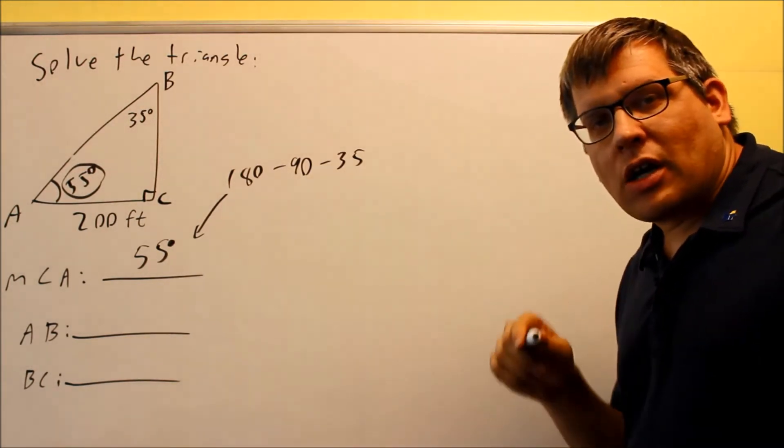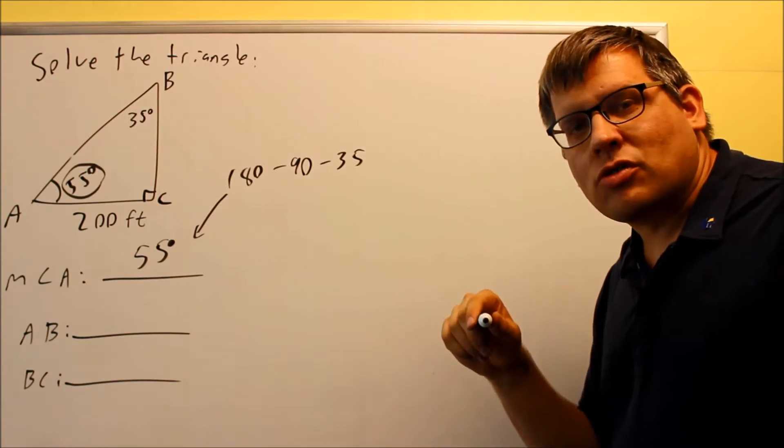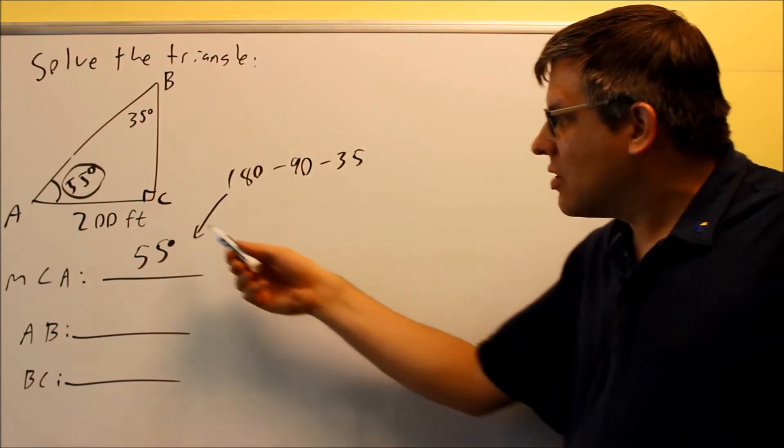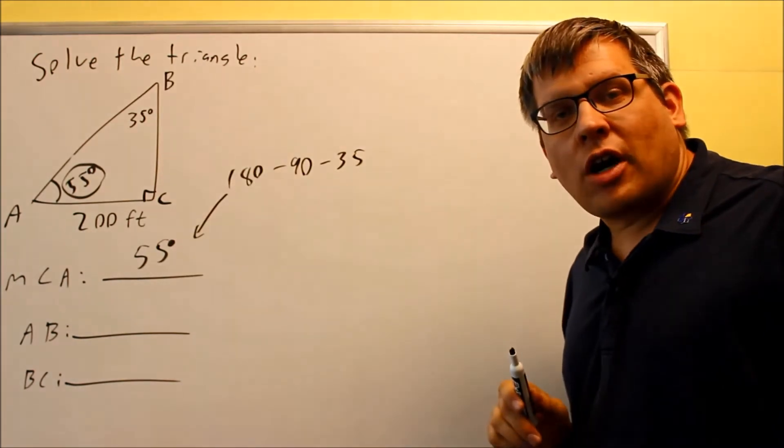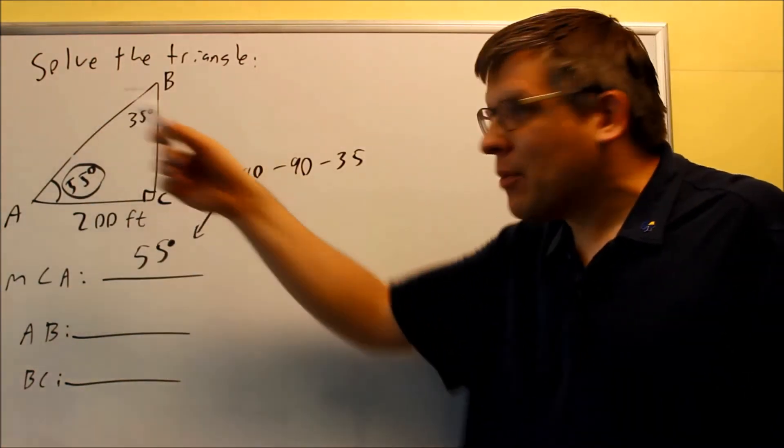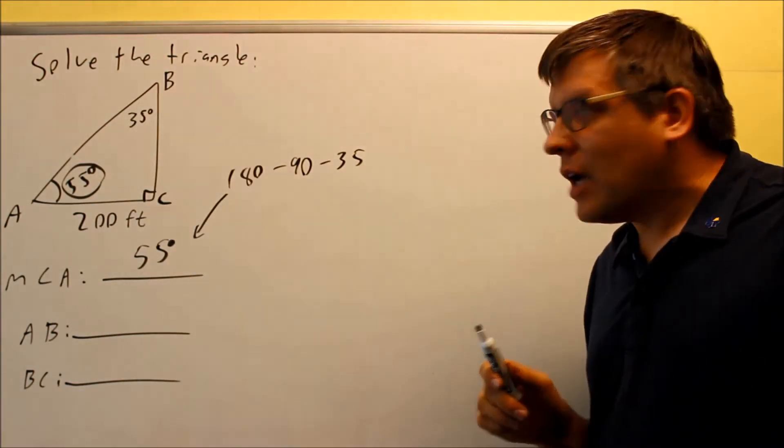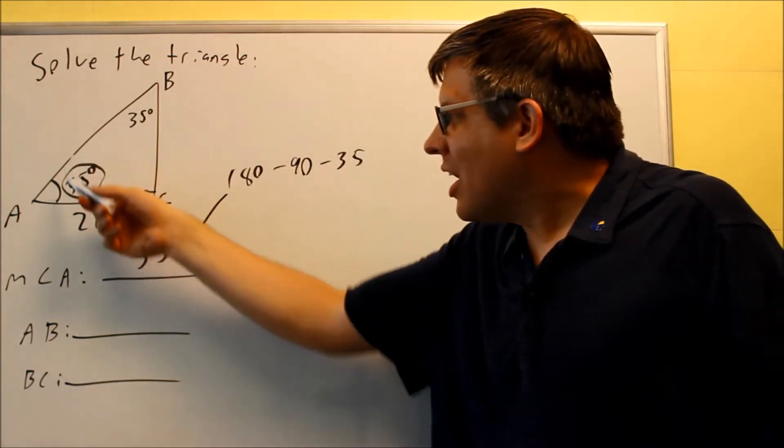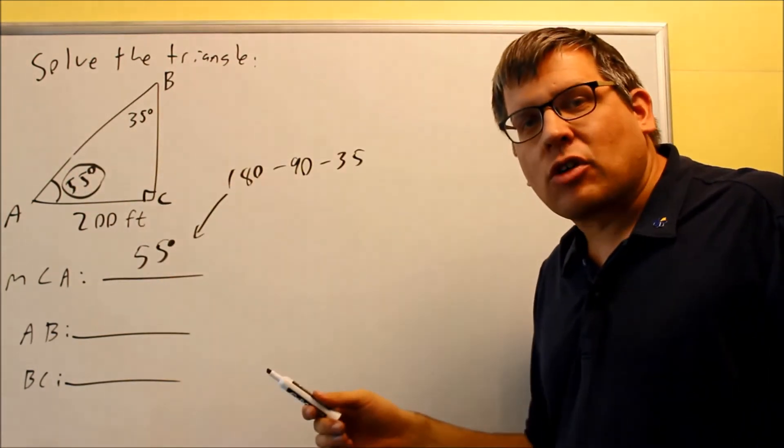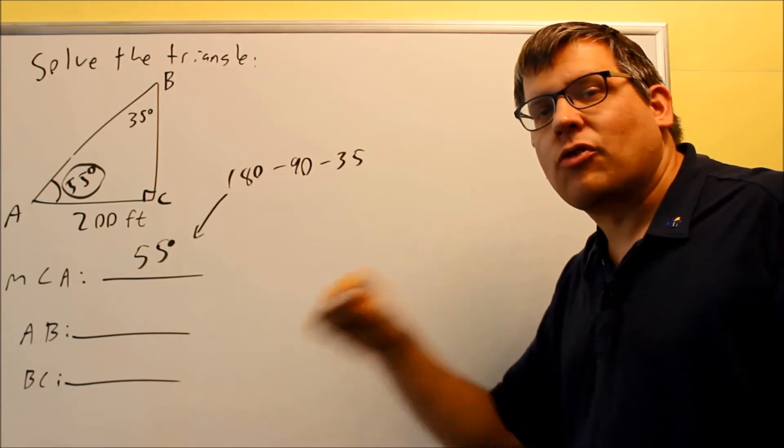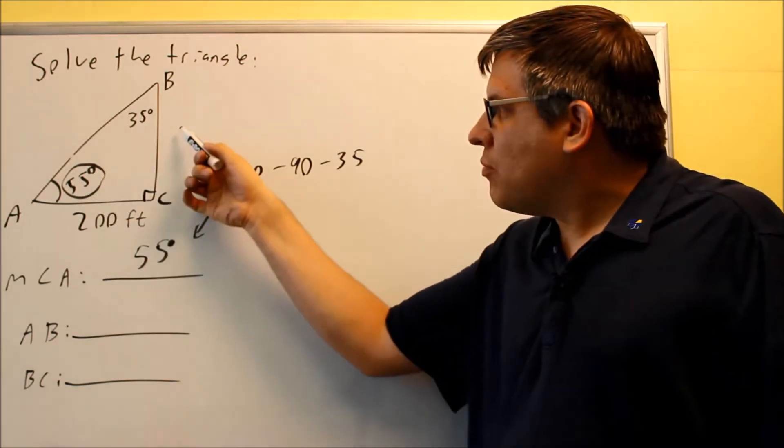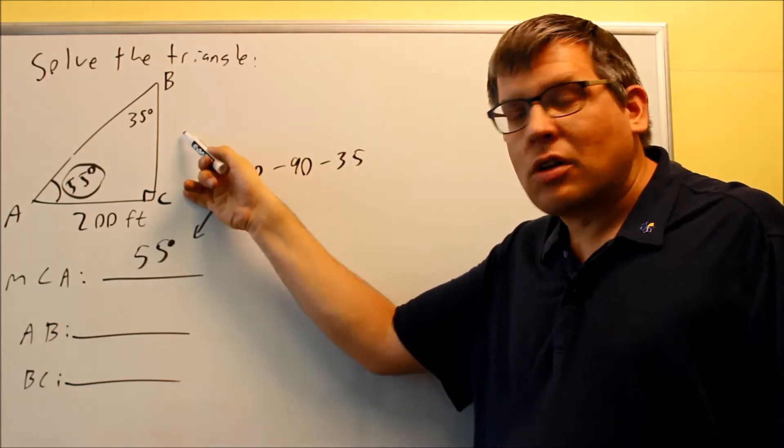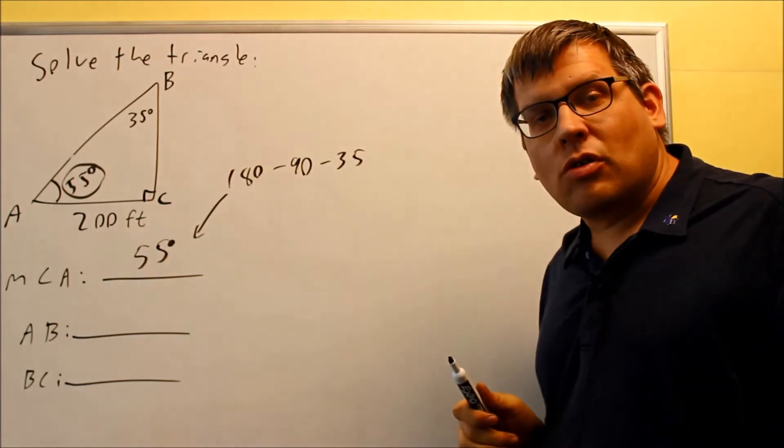I'm going to use 55 degrees and start by solving for AB. We want to pick out of the six different trig functions one that relates the side that you're given with the side that you're trying to find. We're trying to find the hypotenuse, so I'm trying to find hypotenuse. If I'm working with 55 degrees, that means BC is going to be your opposite and your 200 is going to be your adjacent.